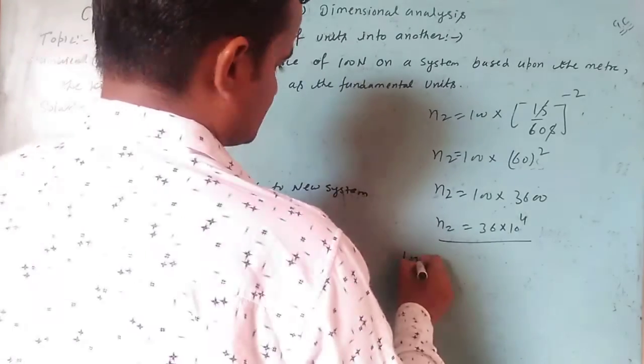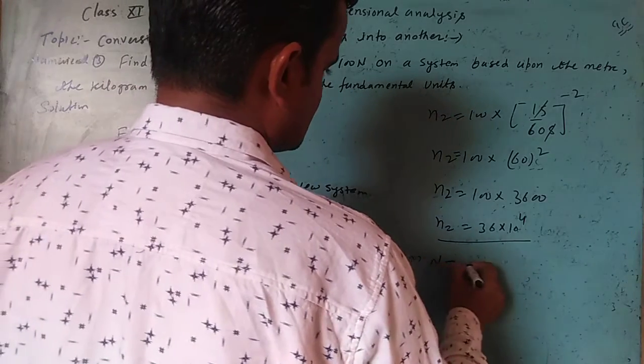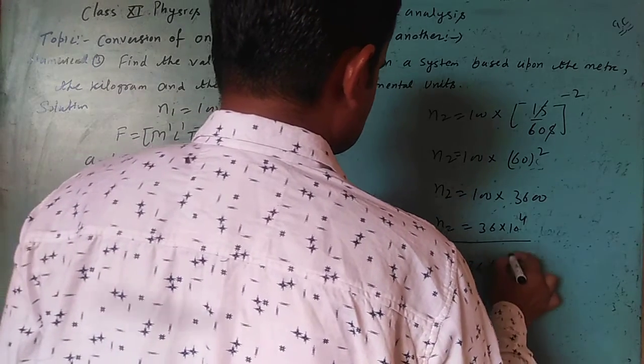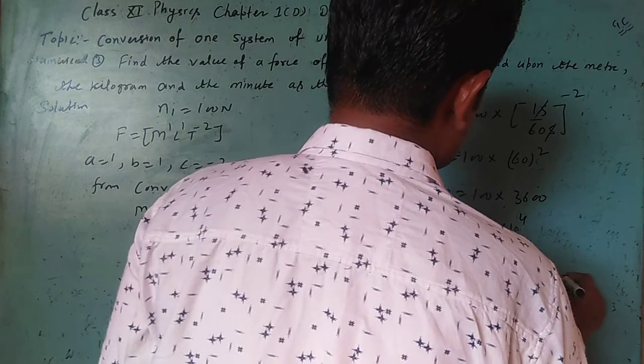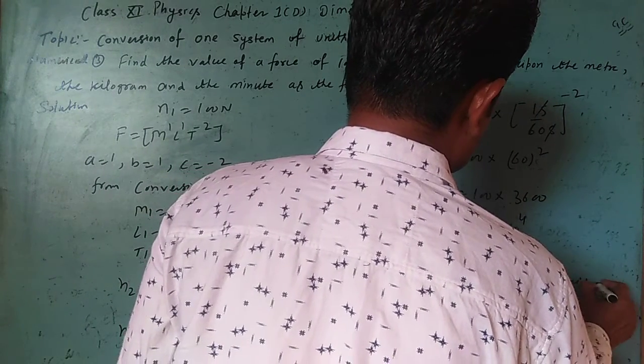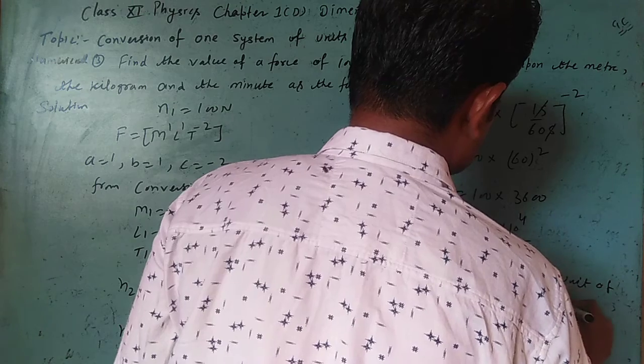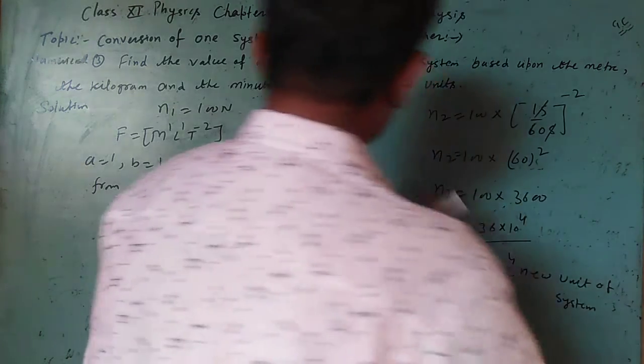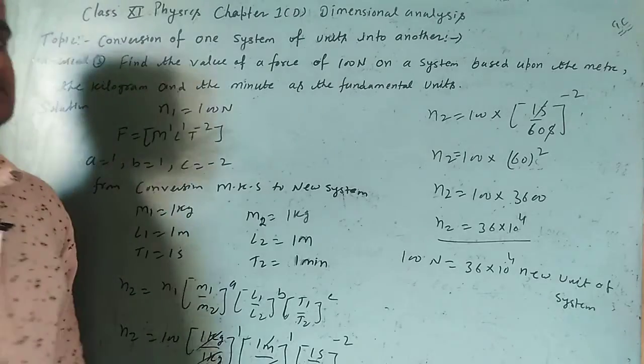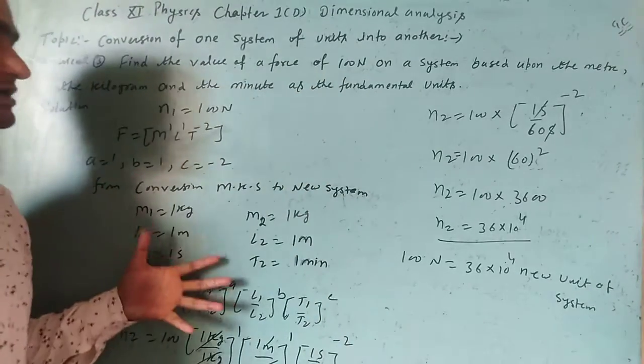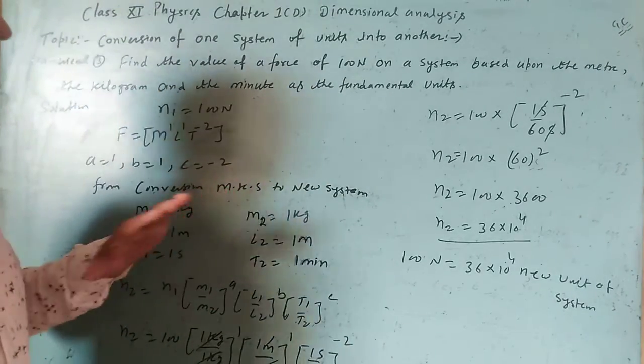100 Newton is equal to 3.6 × 10^4 in the new unit of system. Please note down this process. This is the last topic, the last numerical. Dimensional analysis is completely finished.